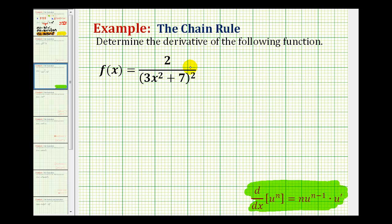So we can eliminate the denominator if we move this up into the numerator, which would change this exponent to negative two. So we'd have f of x equals two times the quantity three x squared plus seven raised to the power of negative two.